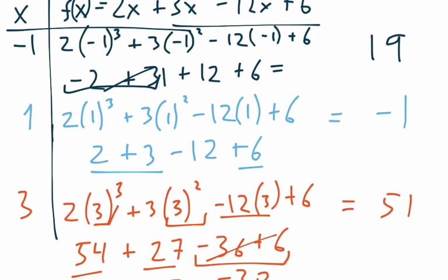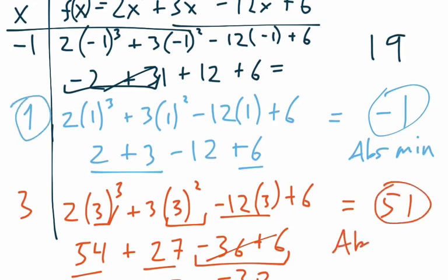So clearly, negative 1 is the absolute minimum value. And that occurs at the x value of x equals 1. And then the absolute maximum is at 51. And that occurs at x equals 3. And you're done. That's it.